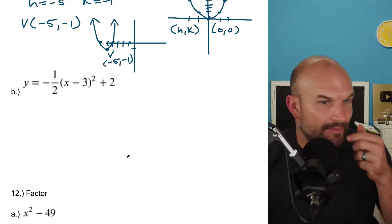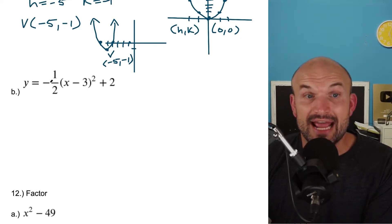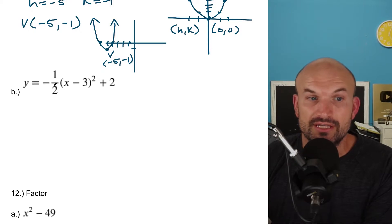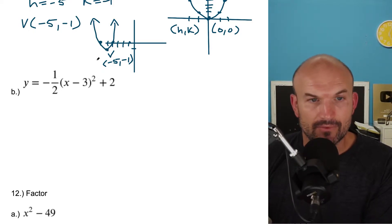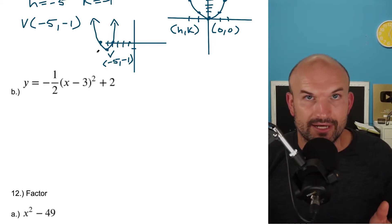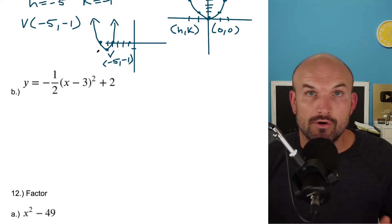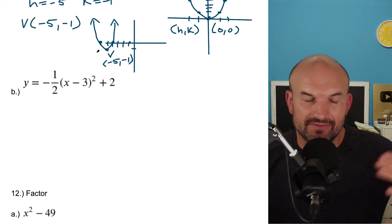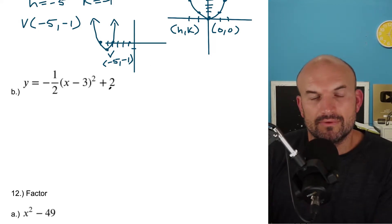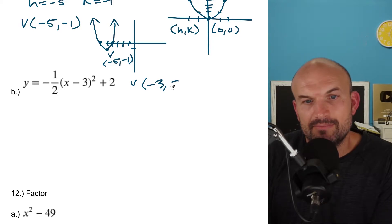Now in this example, I want you to see that the a is now negative and it's actually being vertically compressed. So when I go over one, instead of going up one, it's only going up one half. When I go over two, instead of going up four, it's only going up two — but actually we're not going up, we're going down because it's negative. When you have a negative, that's going to force it down. So hopefully you recognize the vertex here is going to be negative three, positive two.